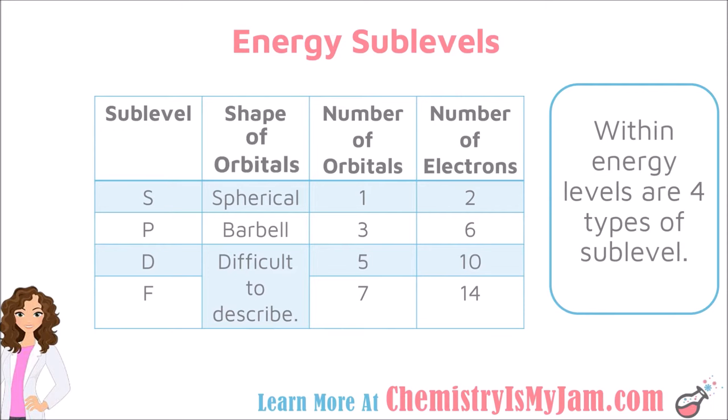The S sublevel has orbitals with a spherical shape. The P sublevel has orbitals with a barbell shape. The D and F have shapes that are a little more difficult to describe. The number of orbitals is important: the S sublevel has one orbital, the P has three, the D has five, and the F has seven.